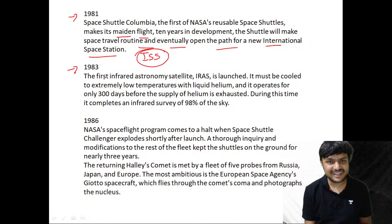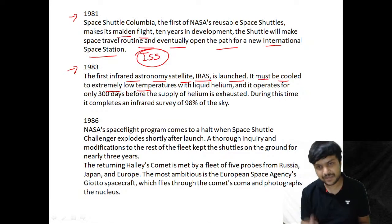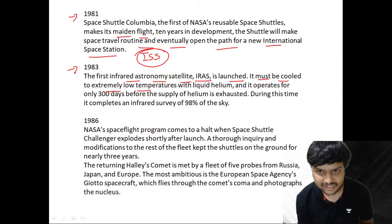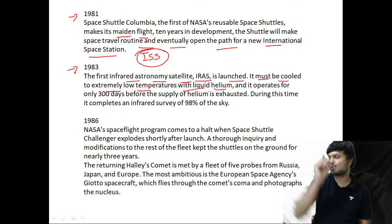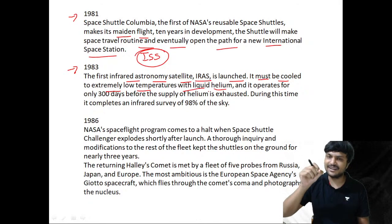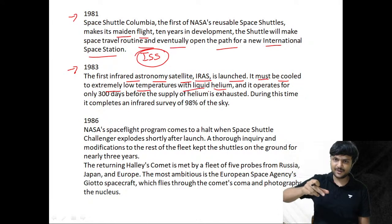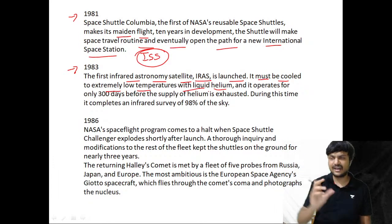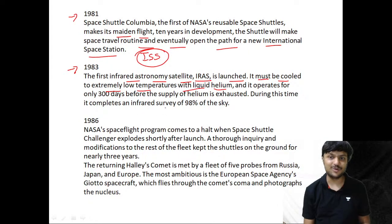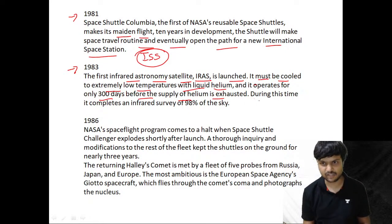In 1983, the first Infrared Astronomy Satellite (IRAS) is launched. It must be cooled to extremely low temperatures using liquid helium — liquid helium is so cold that a rubber ball dipped in it will shatter when dropped on the ground. It operates for only 300 days before the helium supply is exhausted.